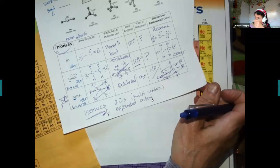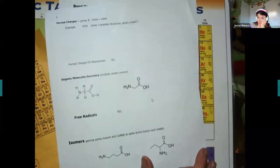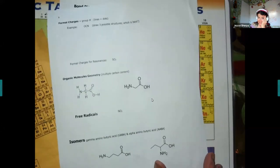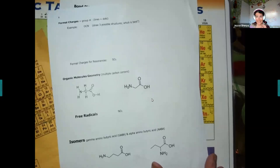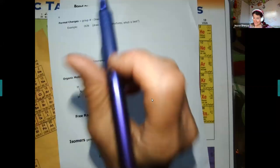So, OCN⁻ — we're going to do formal charges. I'm a biochemist and I've never used formal charges until I was forced to teach them. My definition: take the group number, which is the A number — the valence electrons — then subtract lines plus dots. A line only counts once; every dot counts.